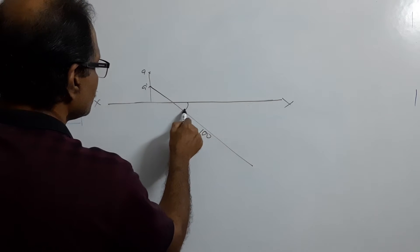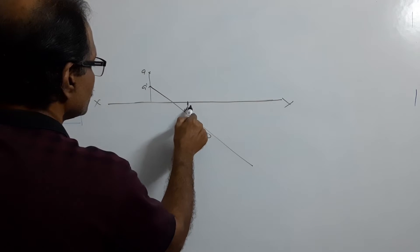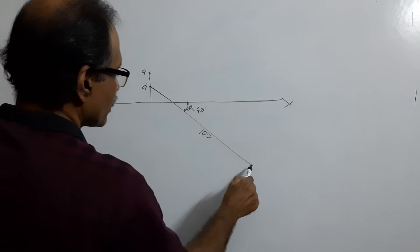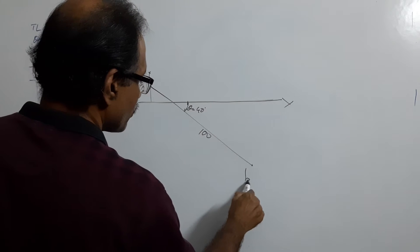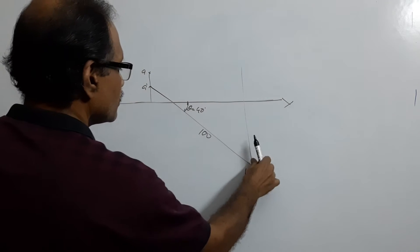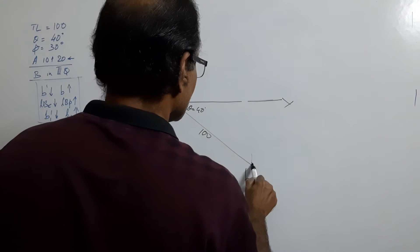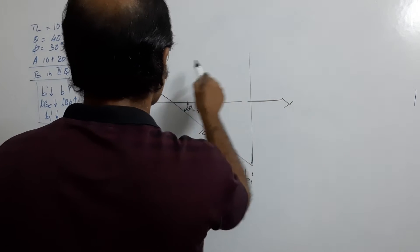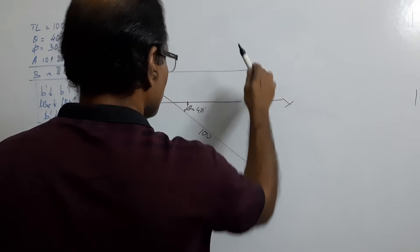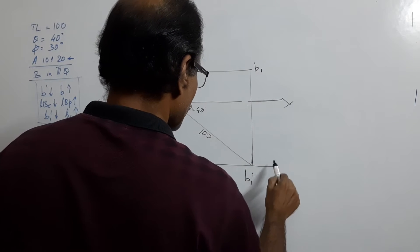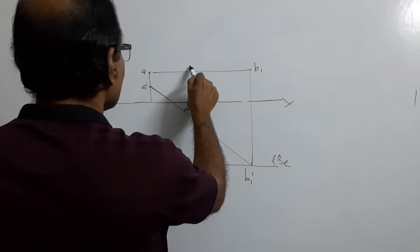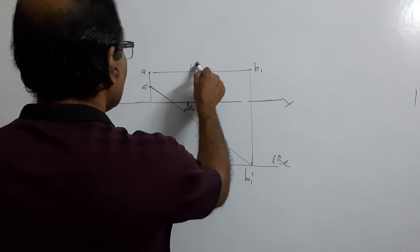The true length is 100 and theta equals 40 degrees. Locate b1'. Then find lb1', which is the plan length.